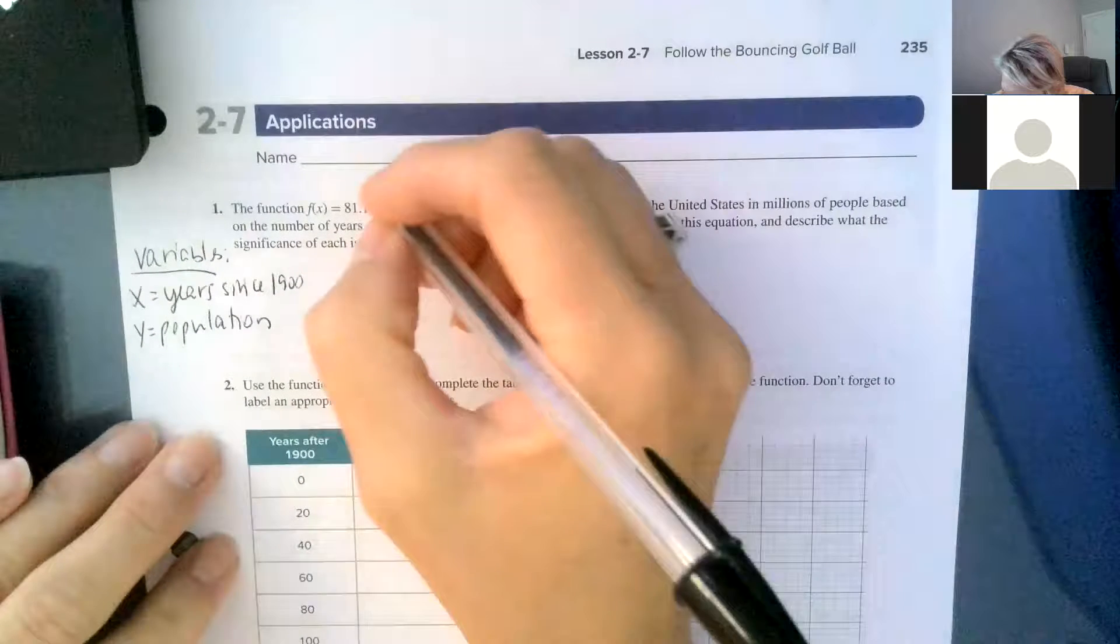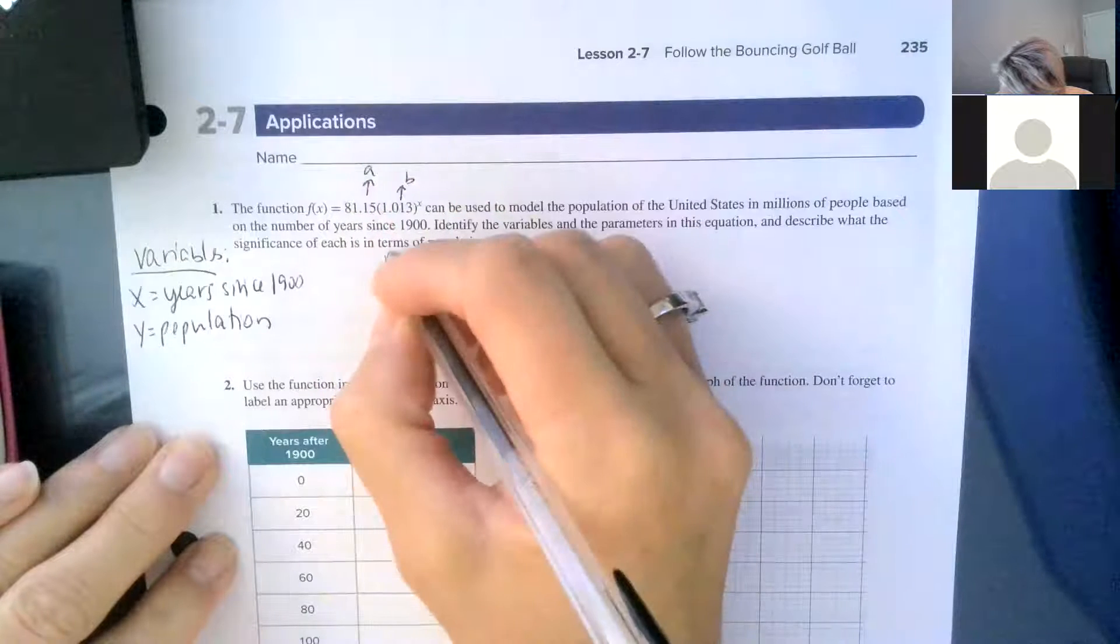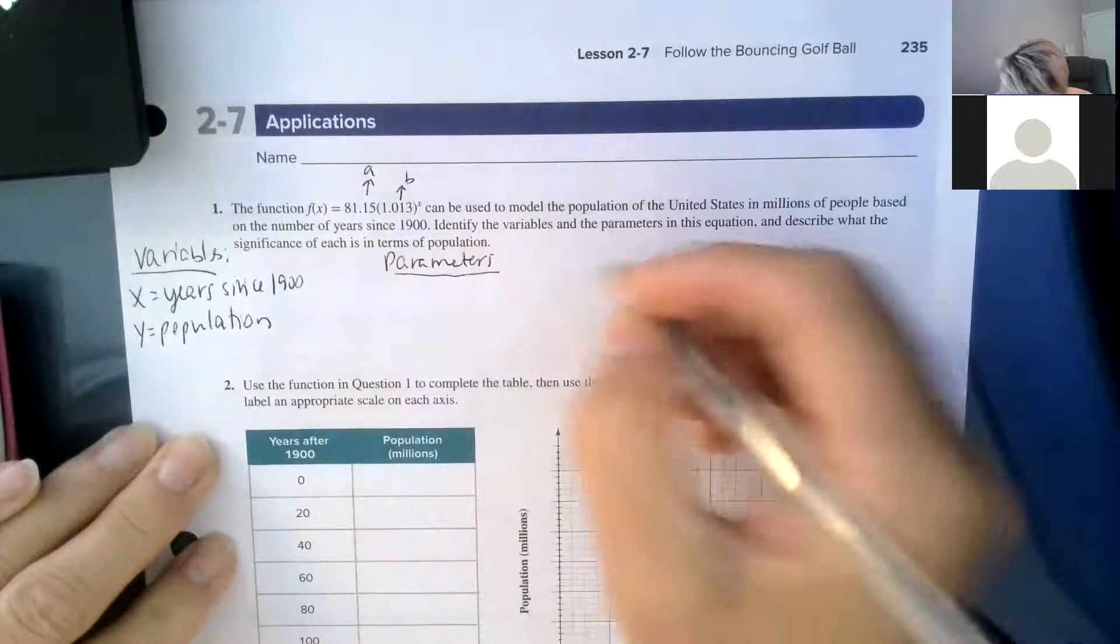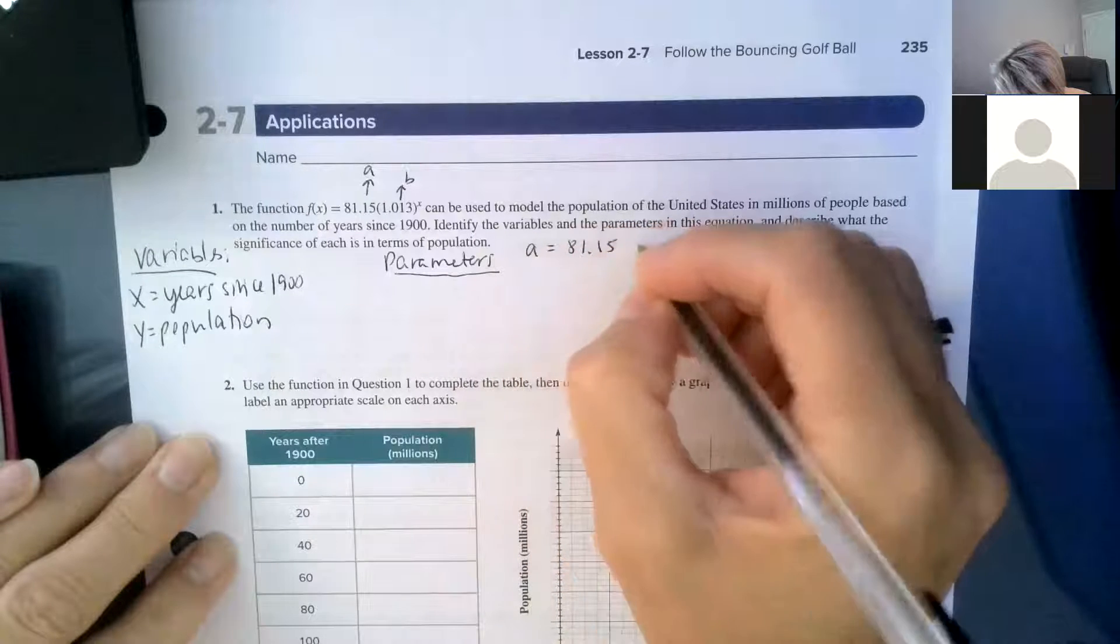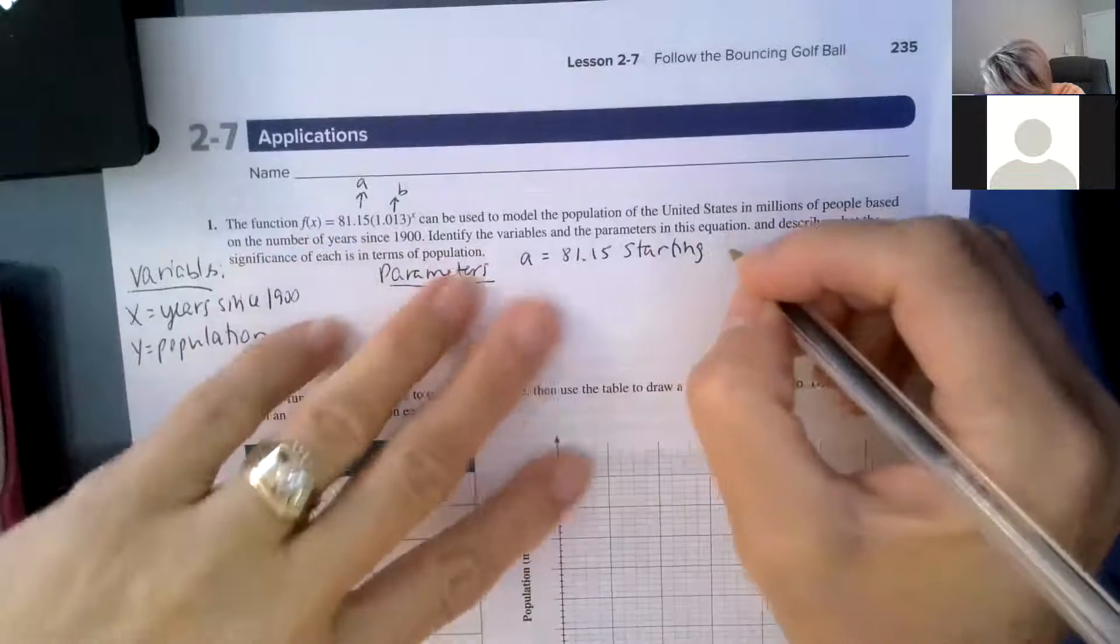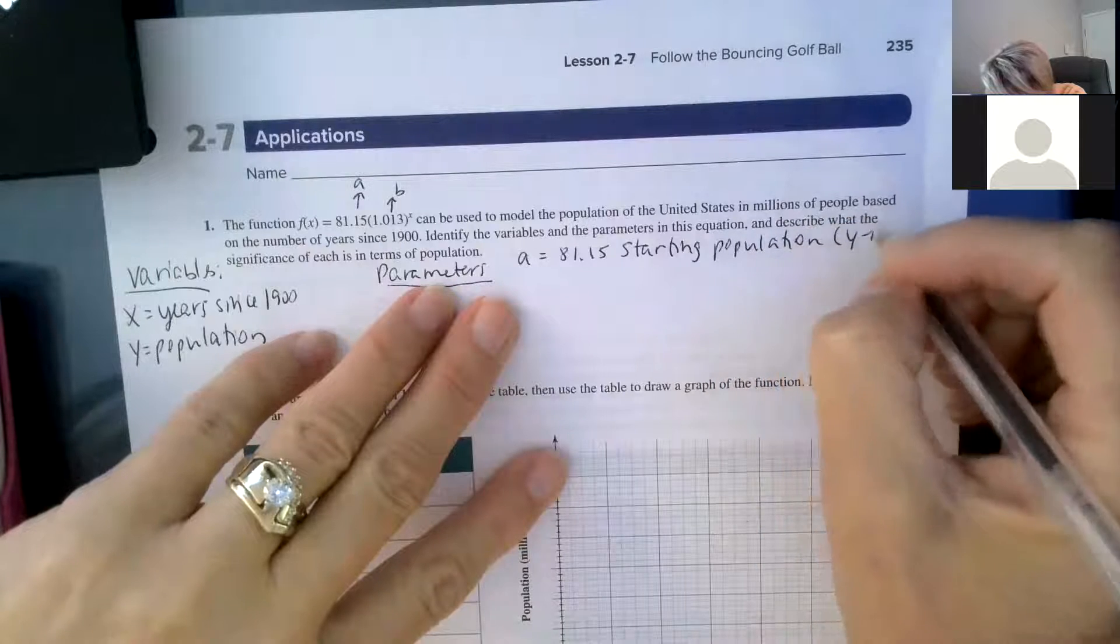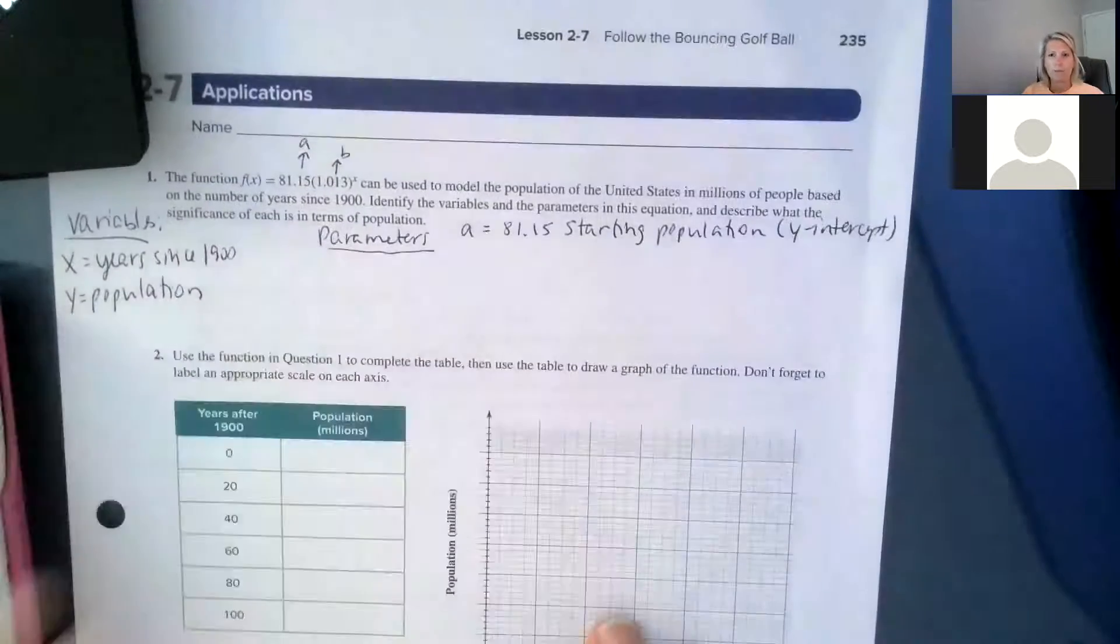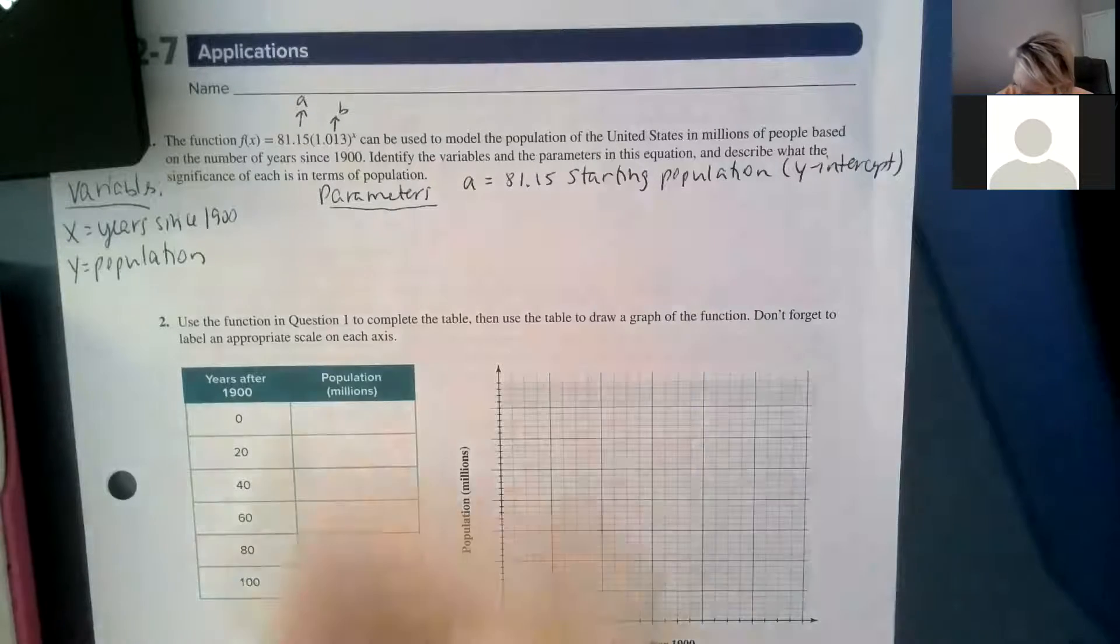And then the parameters, that's our a and that's our b. So a is 81.15, it's our starting population. It's also what we call our y-intercept. So we've been talking about y-intercept since the beginning of lesson 2.1, really 2.2.